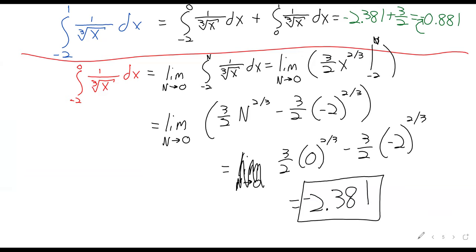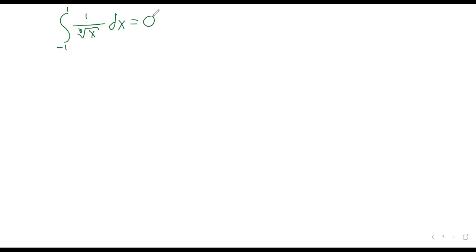If instead of negative 2 we had kept negative 1 to 1, the integral would have wound up being zero because of the symmetry around the origin — the negative and positive pieces would cancel each other out. But you have to be really careful when discussing symmetry around the origin in that way.